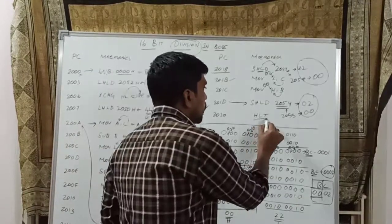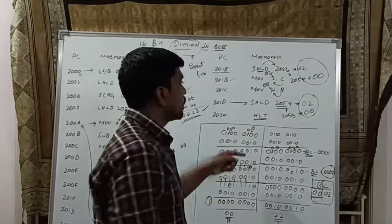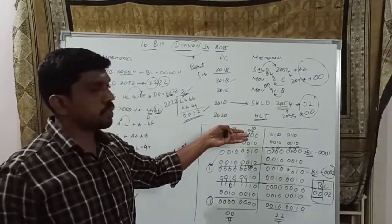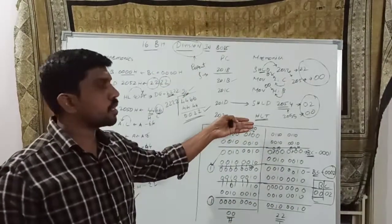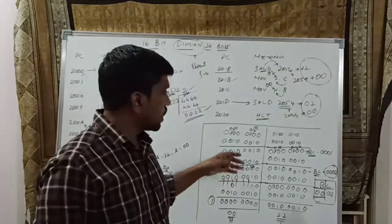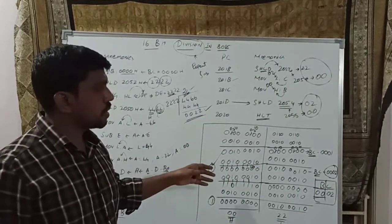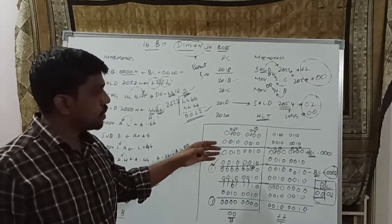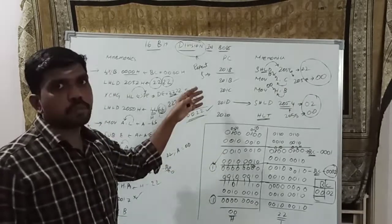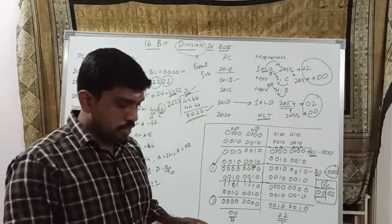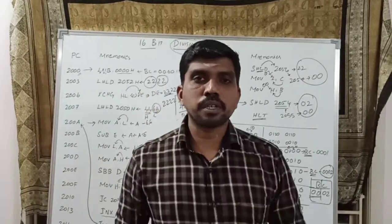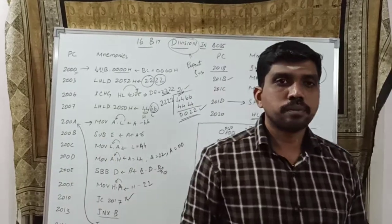It's the remainder value and quotient value. End of the program at 2020H represents HLT — halt. After that, the microprocessor stops. First, understand the manual calculation, then using that you can write the program easily. Thanks for watching my channel, please subscribe. Thank you.